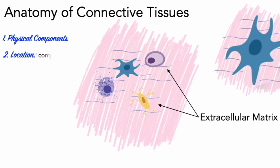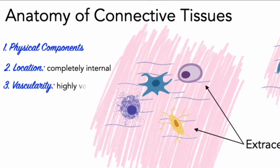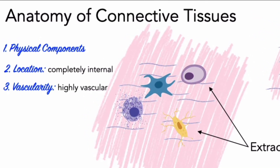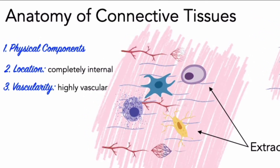Second, location. Connective tissues occur throughout the body, but unlike epithelial tissues, they are not exposed to the outside environment. Third, vascularity. Many connective tissues are highly vascular — that is, they have many blood vessels. There are exceptions; cartilage, for example, is not highly vascular. But unlike epithelial tissue, which is avascular, connective tissue is generally highly vascular.